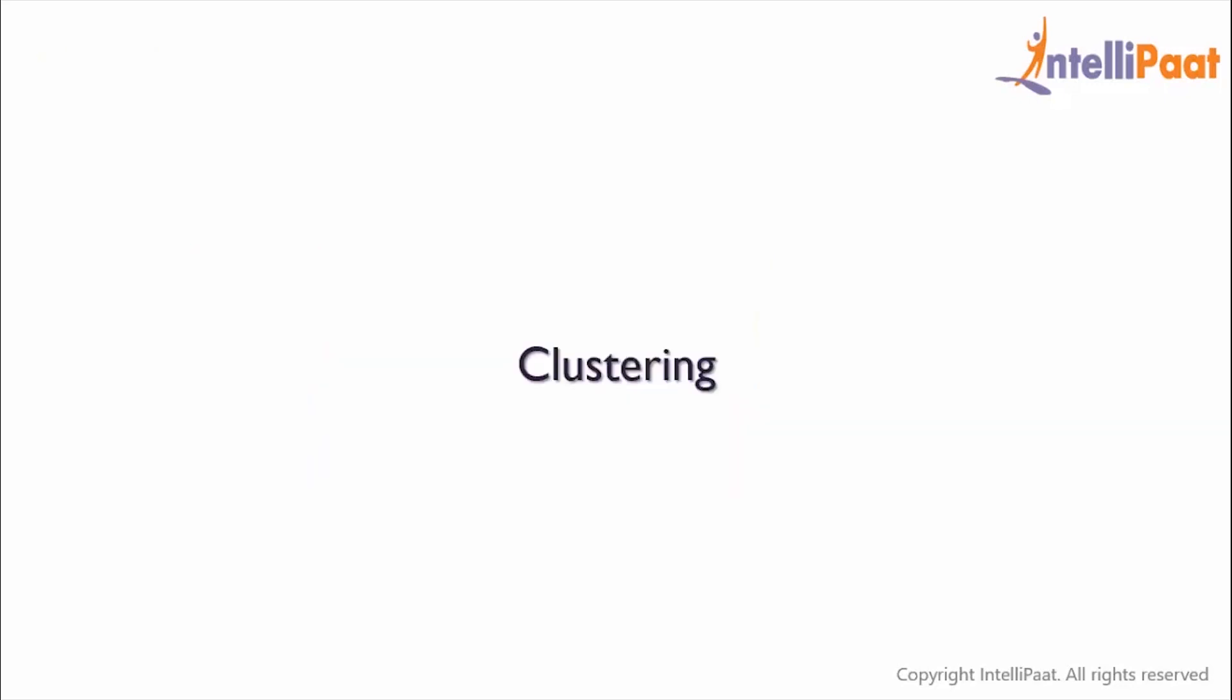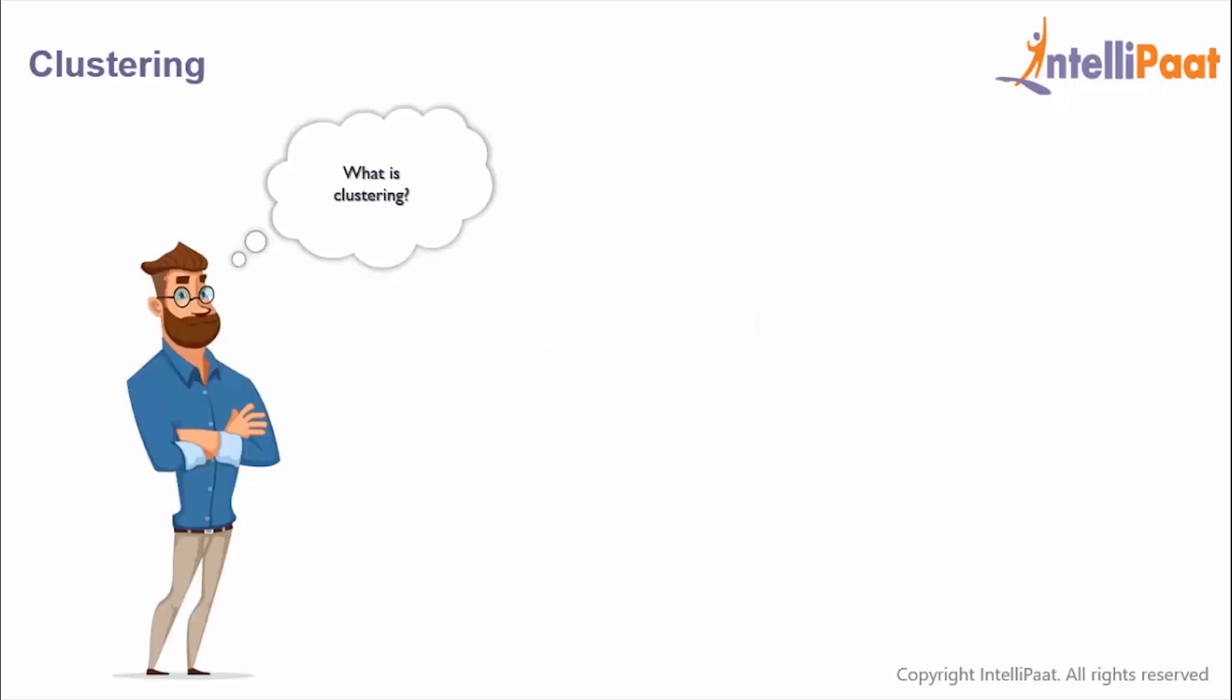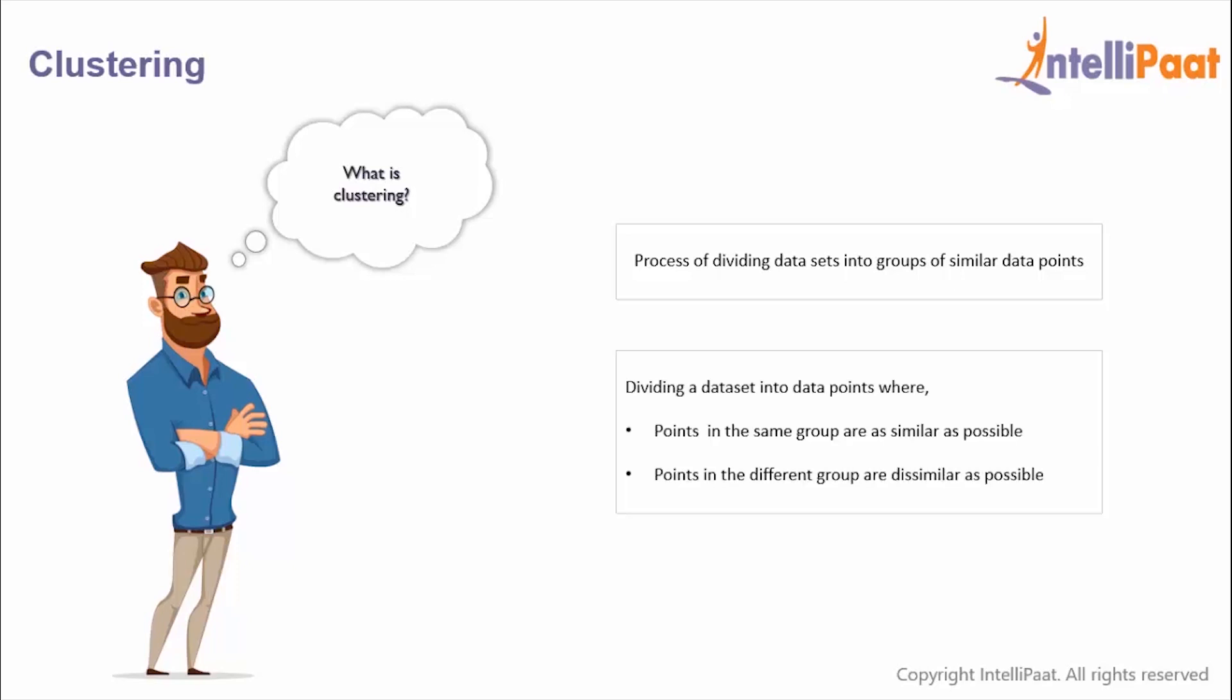Before we explore k-means clustering, let us first understand what is clustering. In simple words, clustering is a process of dividing the data set into groups of similar data points or features. Clustering is a process of dividing a data set into groups where the data points in the same group are as similar as possible and the data points in different groups are as dissimilar as possible.